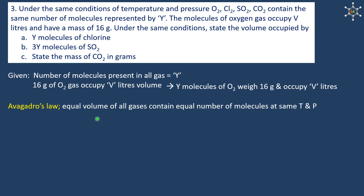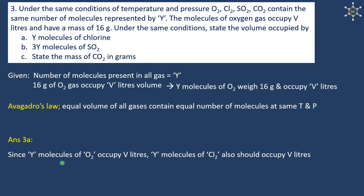Avogadro's law states that equal volumes of all gases contain equal numbers of molecules at the same temperature and pressure. So V liters each of oxygen, chlorine, sulfur dioxide, and carbon dioxide all contain Y molecules. For question A, since Y molecules of oxygen occupy V liters, Y molecules of chlorine also occupy V liters according to Avogadro's law.